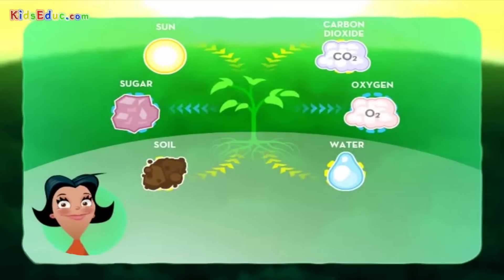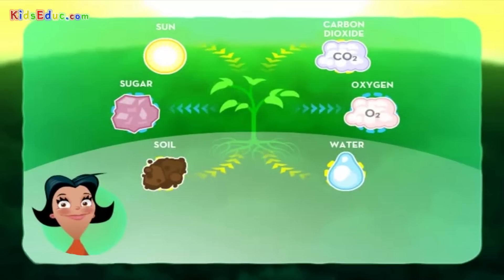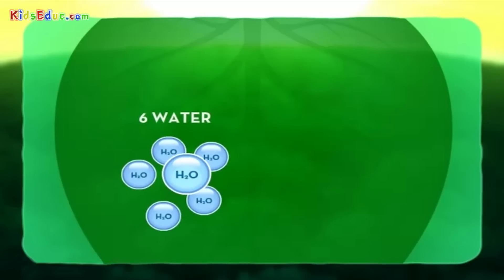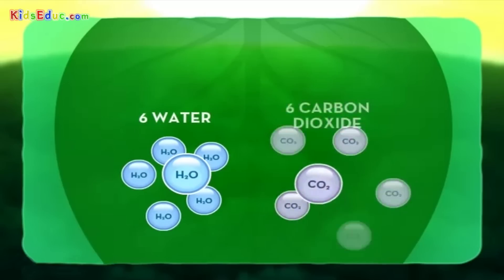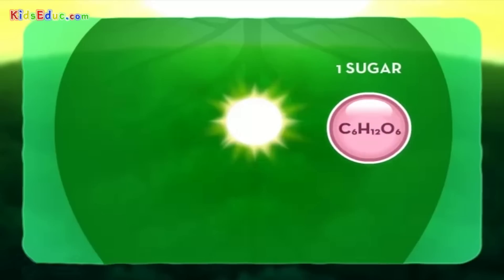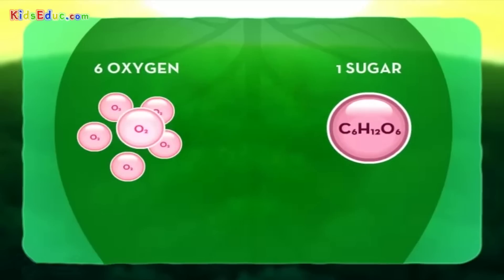There you go. Now let's take a closer look at photosynthesis. What actually goes on when photosynthesis occurs is a chemical reaction. The plant takes 6 molecules of water and 6 molecules of carbon dioxide, and using light energy, combines them into one molecule of sugar and 6 molecules of oxygen.